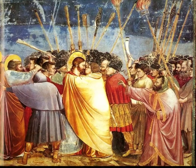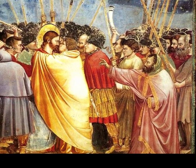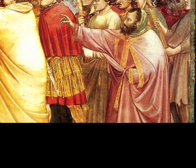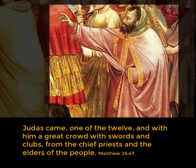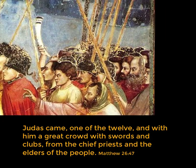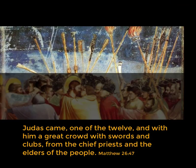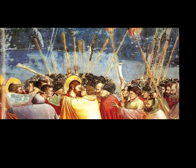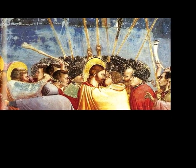Giotto is actually describing a lynch mob. If you look closely at the elements, we see a priest pointing accusingly at Jesus, then the hard faces of the mob, and the spears, weapons, and torches — and even a ram's horn being blown.